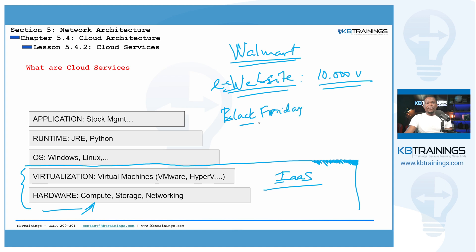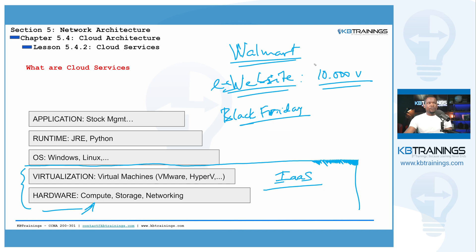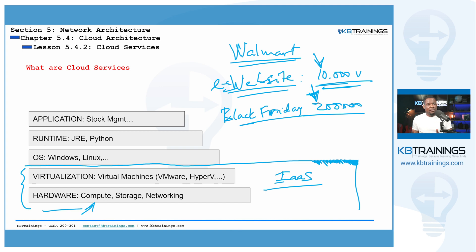Let's say it's November and it's Black Friday. Before COVID, Black Friday was people going into stores; now Black Friday is online — Cyber Monday and all those events. Millions of people are trying to visit the website to catch a deal, so instead of 10,000 visitors we're looking at 200,000 visitors at the same time. If they have their own servers that can only handle 10,000 visitors, the server is going to crash — and this actually happened, as Walmart's website was down on a certain Black Friday.